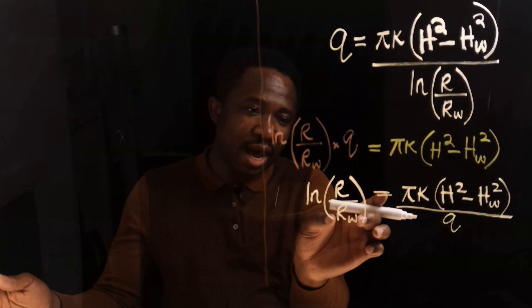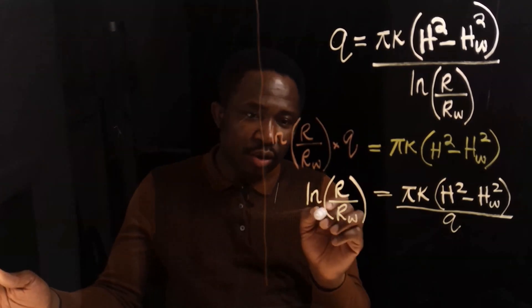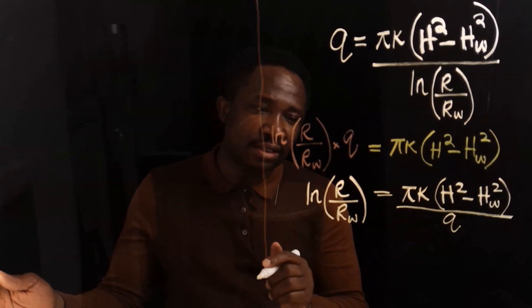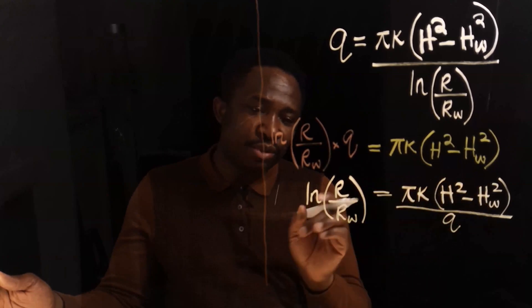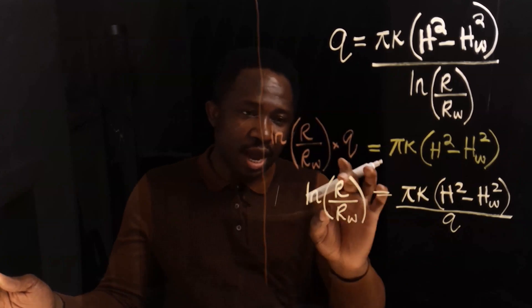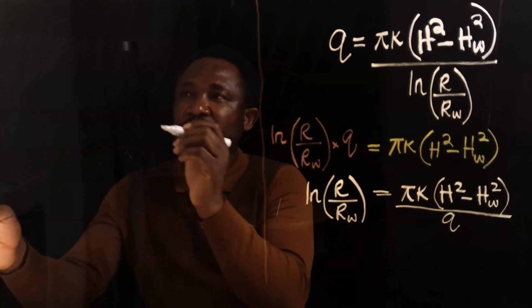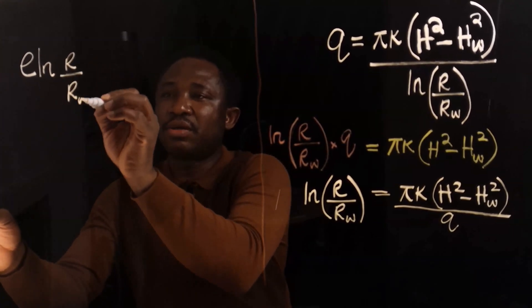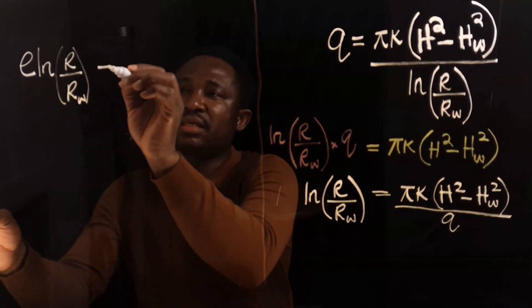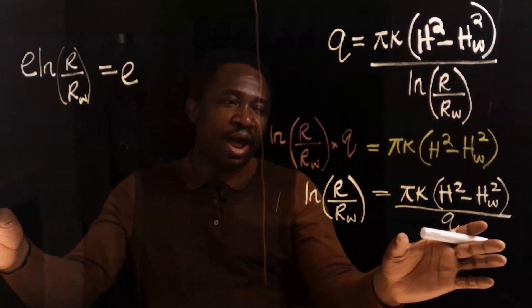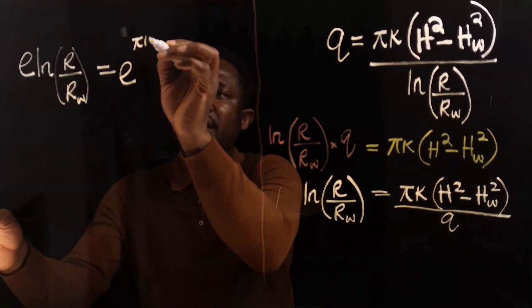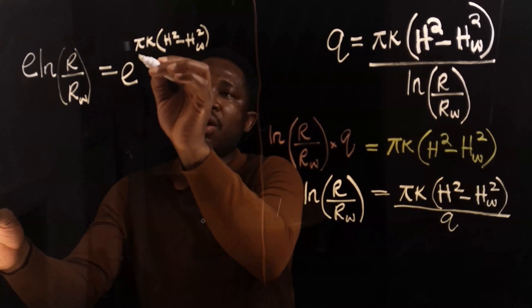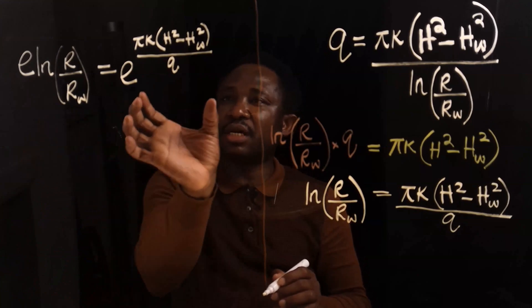Next, our aim is to make R subscript W the subject. This natural log is enclosing everything here, so we're going to introduce exponential to both sides — that is, take the exponential of both sides — so that the exponential neutralizes this natural log and R divide R subscript W will be free. I'm going to take the exponential of the natural log of R divide R subscript W, and take the exponential of everything here: pi K, in bracket, H squared minus H subscript W squared, all to the power of Q.